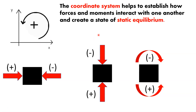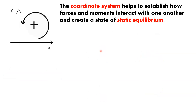The coordinate system establishes how forces and moments interact to create a state of static equilibrium. A fairly standard, conventional coordinate system has x positive to the right horizontally, y positive going up vertically, and moments positive counterclockwise. Those are the positive directions, but that's not the only option — it depends on the situation and the forces you want to represent.